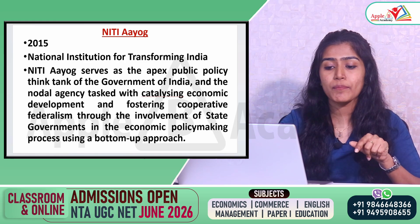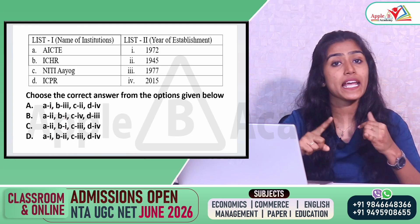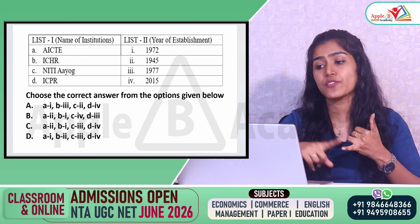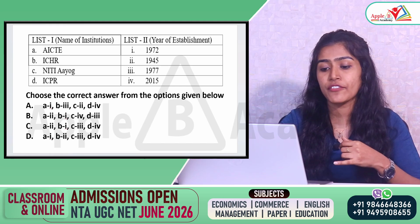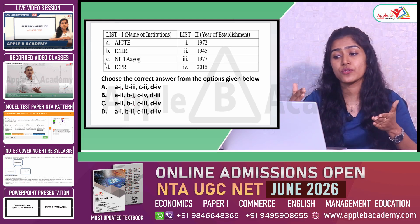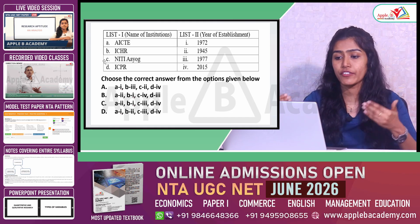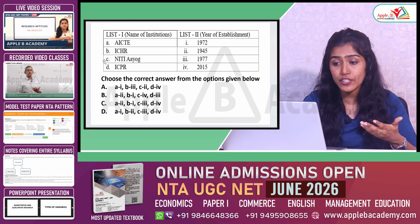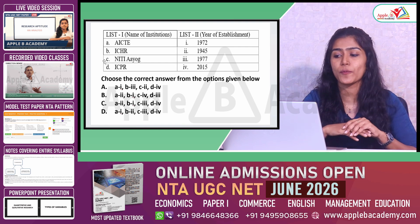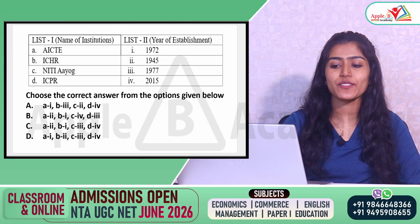Coming back to the question, we need to identify the years of establishment for all institutions in List 1. AICTE was established in 1945, so A matches with 2. ICHR was established in 1972, so B matches with 1. NITI Aayog was established in 2015, so C matches with 4. ICPR was established in 1977, so D matches with 3. The right combination is A-2, B-1, C-4, D-3, which is option B — so the correct answer is option B.